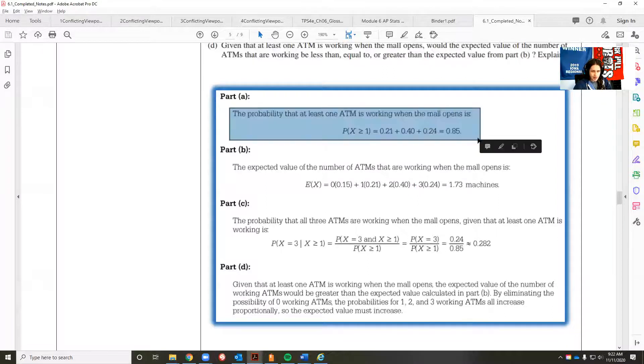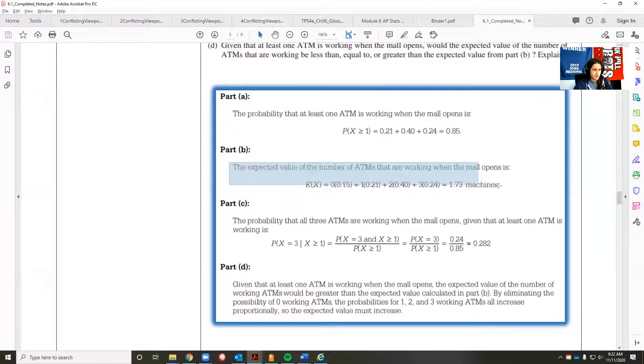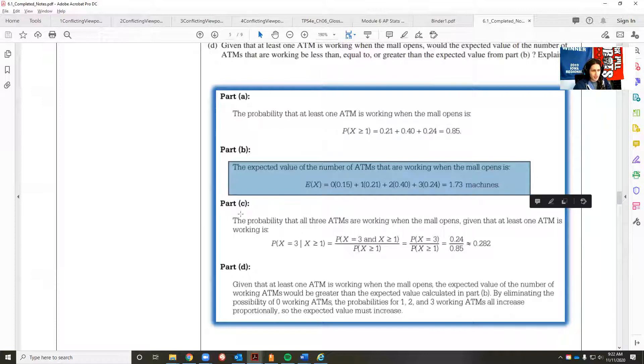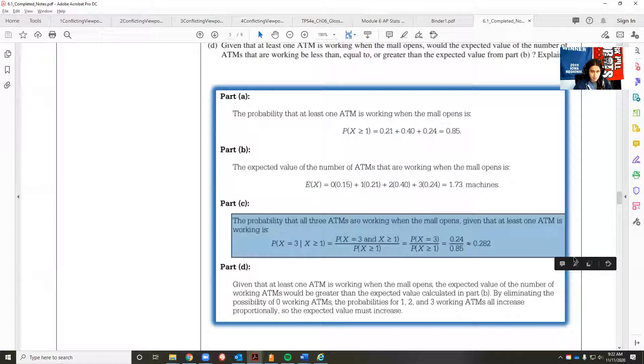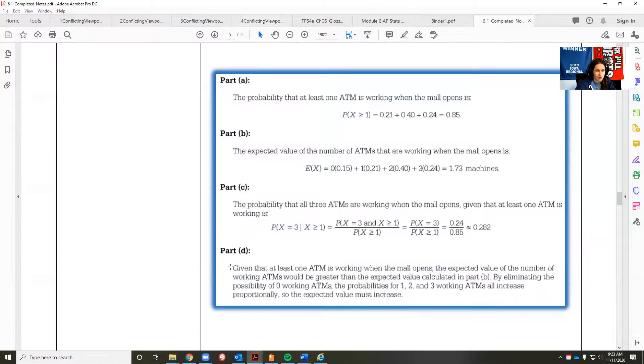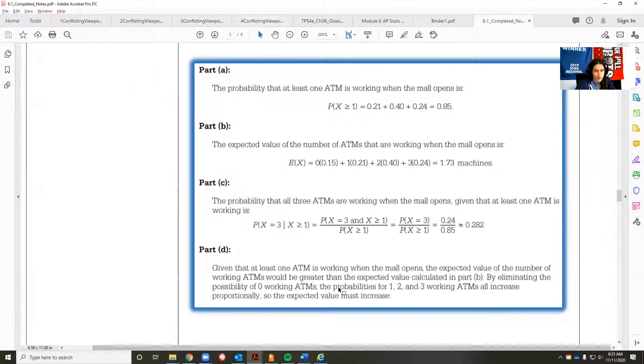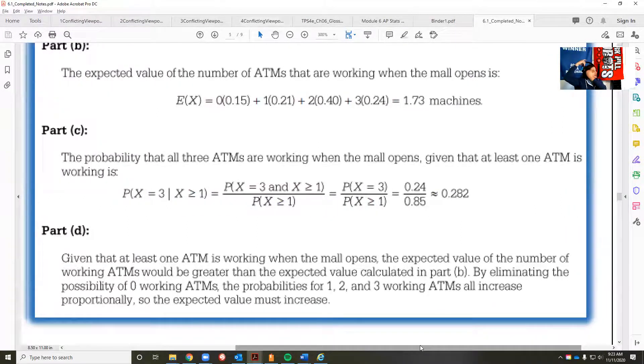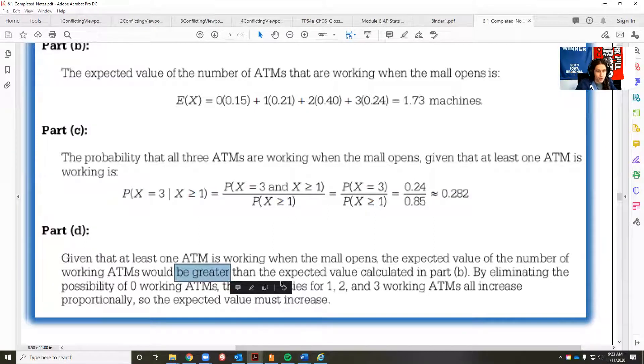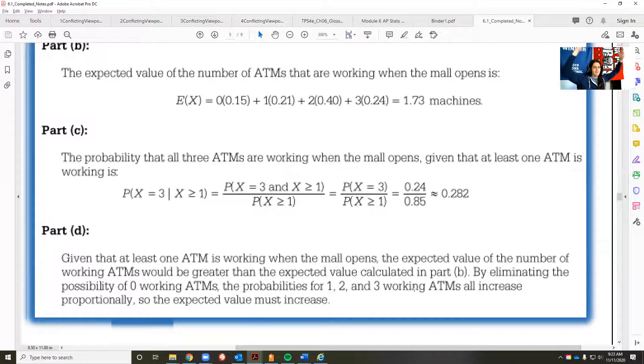Given that at least one ATM is working when the mall is open, would the expected value be less than, equal to, or greater than the expected value for part B? I'm going to flip over to the key on this one because AP has got some wording I want you to see. We've taken out the possibility of 0. What's going to happen to the expected value? Given that at least one is working, the expected value of the number of ATMs would be greater. By eliminating the possibility of zero working ATMs, the probabilities of one, two, and three working ATMs got to go up because zero is not an option anymore.